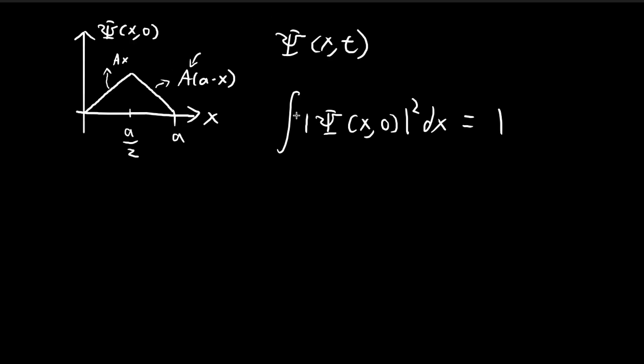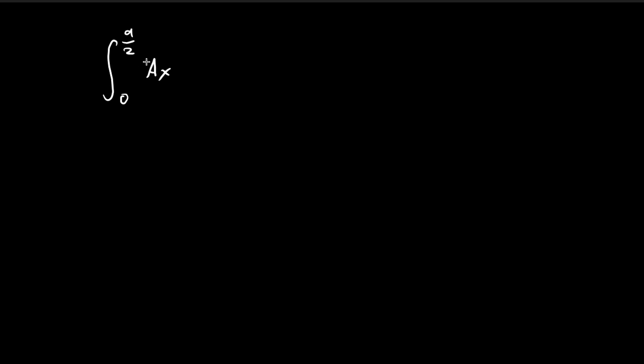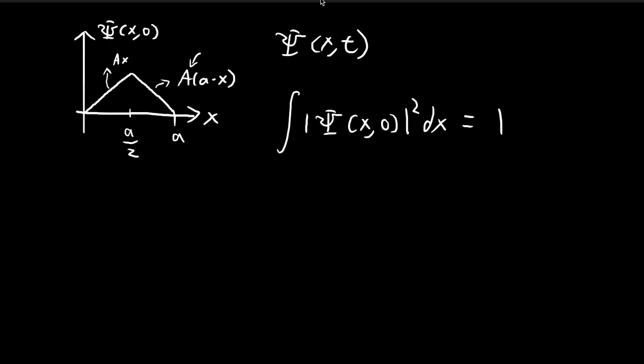And because this whole thing is real, I can do away with the modulus signs and everything, just square this. And then from a over 2 to a, we have A times a minus x, dx, the square, and then dx. And then this is going to be equal to 1. So now our task is to actually solve this integral to deduce what capital A should be.